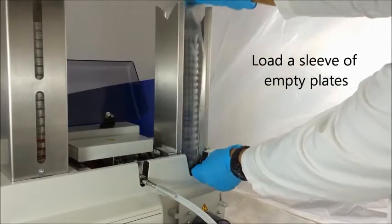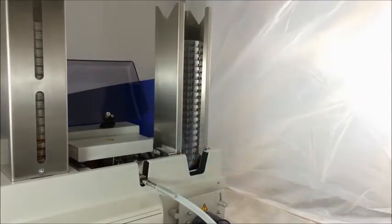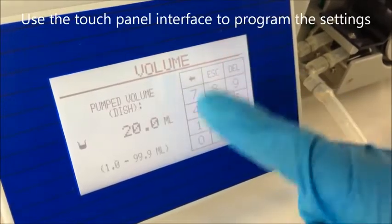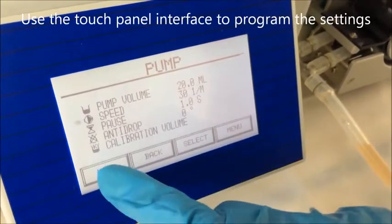Load a sleeve of empty plates into the feed tower. Using the touch panel interface, program the unit with the desired settings.